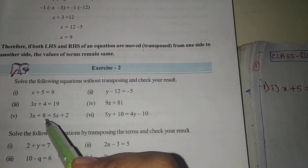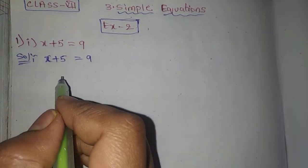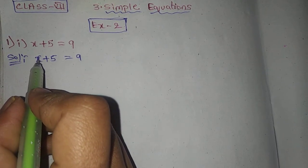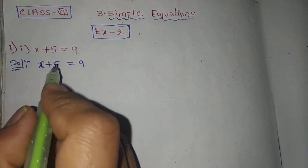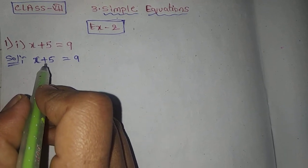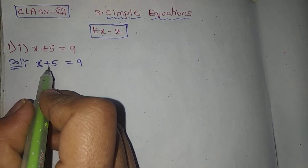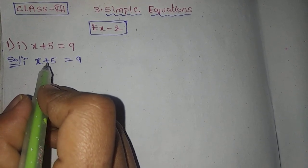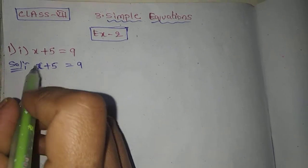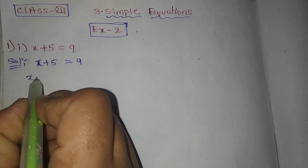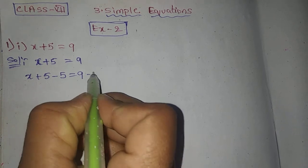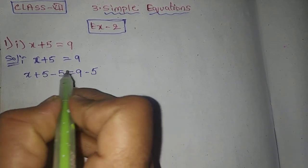x plus 5 is equal to 9. Now we observe the LHS. We have the x value. We remove the 5 by subtracting minus 5. We subtract 5 on both sides.